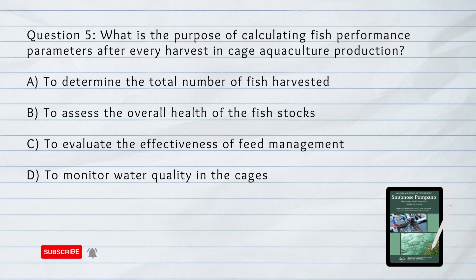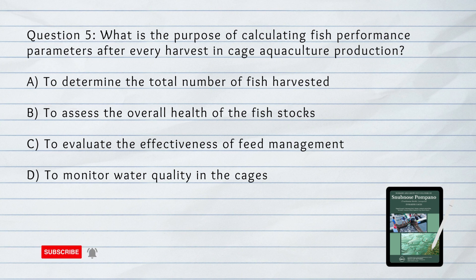Number 5. What is the purpose of calculating fish performance parameters after every harvest in cage aquaculture production? A. To determine the total number of fish harvested. B. To assess the overall health of the fish stocks. C. To evaluate the effectiveness of feed management. D. To monitor water quality in the cages.